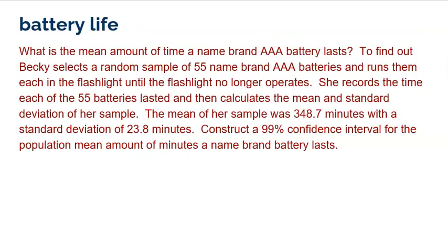Now here's the question we're going to take a look at. What is the mean amount of time a name brand AAA battery lasts? To find out, Becky selects a random sample of 55 name brand AAA batteries and runs them each in a flashlight until the flashlight no longer operates. She records the time each of the 55 batteries lasted and gets the mean and standard deviation of her sample. The mean of her sample was 348.7 minutes with a standard deviation of 23.8 minutes. Construct a 99% confidence interval for the population mean.